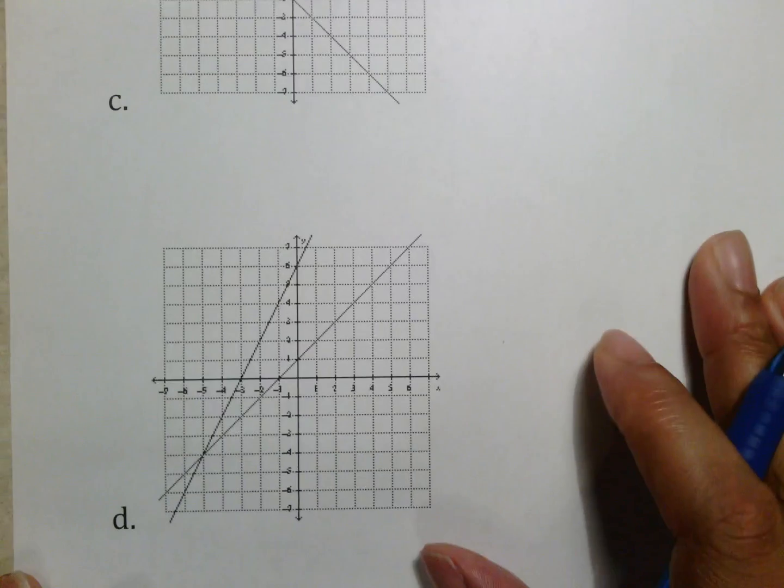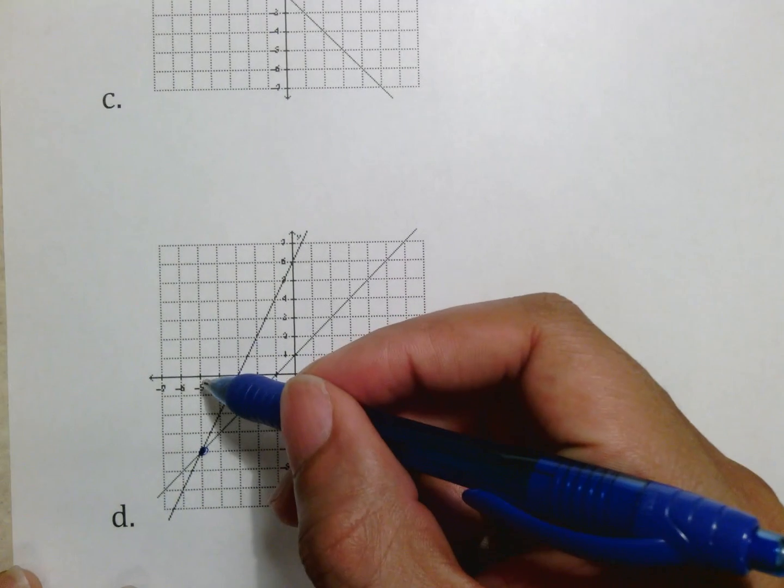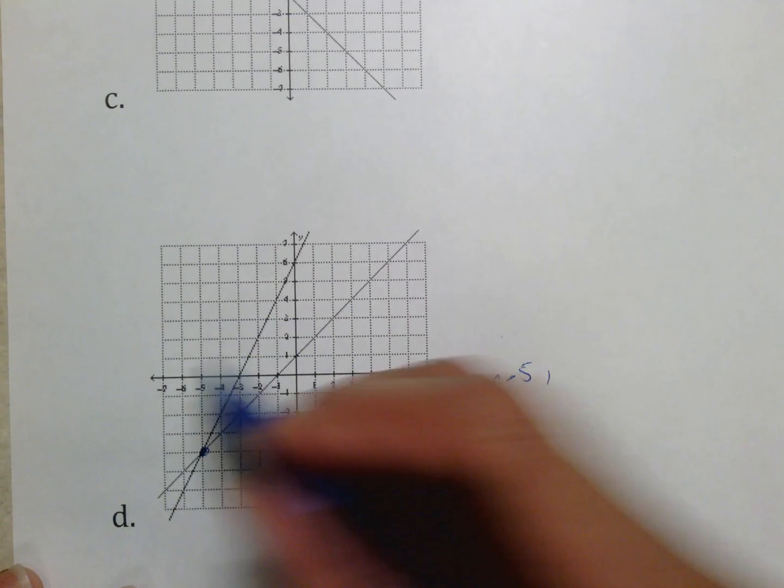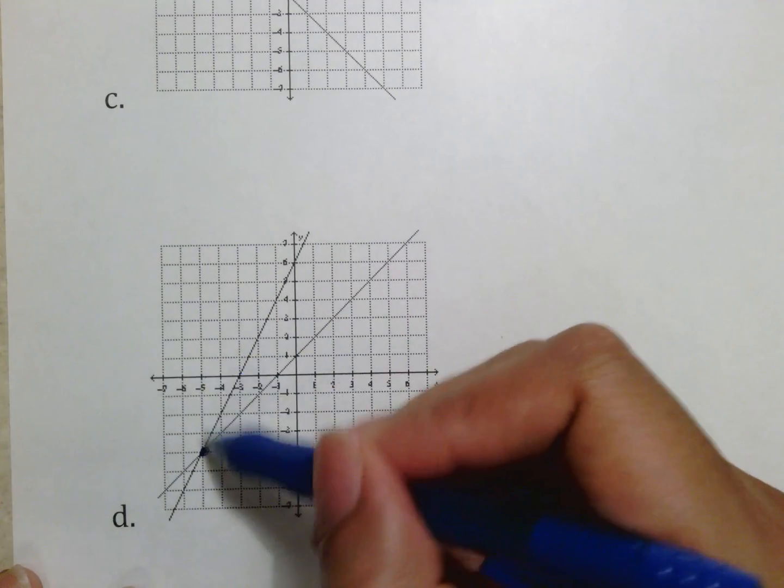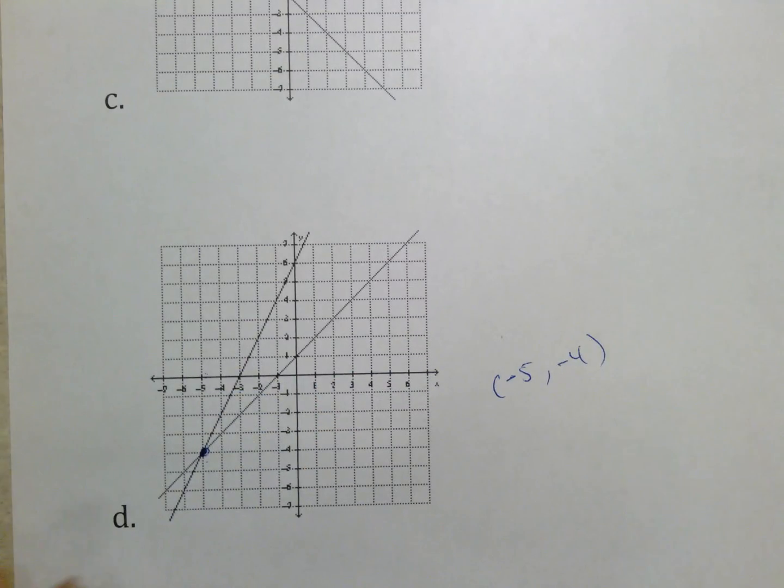And then, just like on this one, the point where they cross is here. That is below the number 5. And so that means that my first number is, I'm sorry, negative 5. And then from here to get there, I go down 1, 2, 3, 4. So negative 5, negative 4 is the solution there.